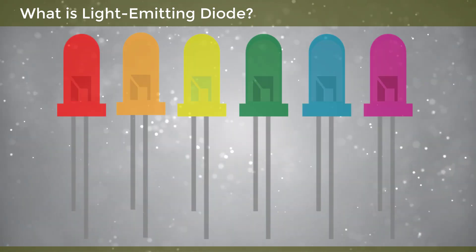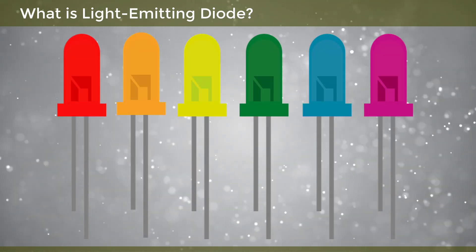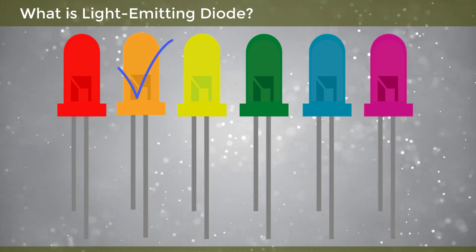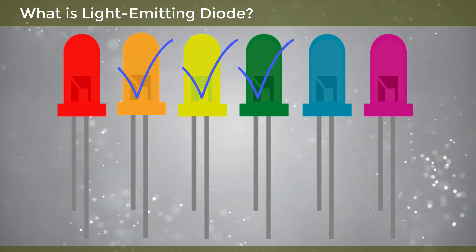LEDs are available in different colors. The most common colors of LEDs are orange, yellow, green, and red.